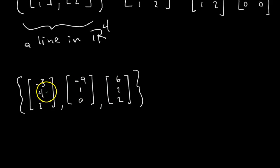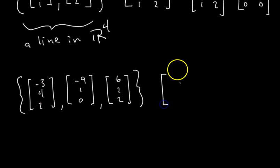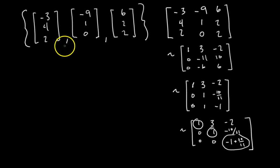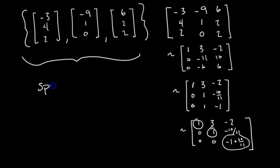We have three vectors in R³. They could span all of R³, a plane in R³, or a line in R³. We apply the technique: put them in a matrix, row reduce, and count the pivots. The row reduction got a little involved, but we can determine from row echelon form that we have three pivots. Three pivots means the span is three-dimensional, so they span all of R³.